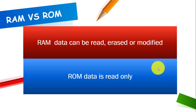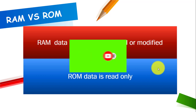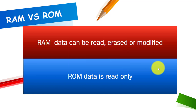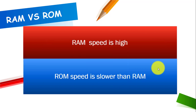RAM data can be read, erased, or modified — you can perform any of these operations on RAM data. Whereas ROM data, as quite evident from its name — read-only memory — means you can only read that data. ROM data cannot be erased, it cannot be modified, it will be read only. The RAM speed is very high whereas the ROM speed is comparatively slower than RAM.